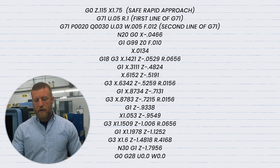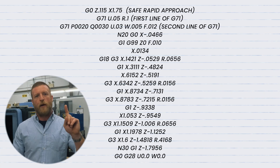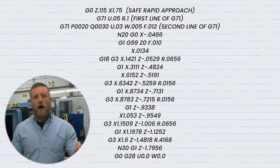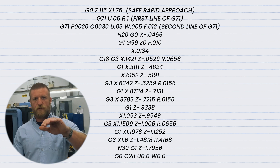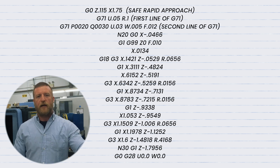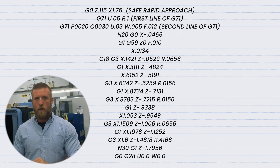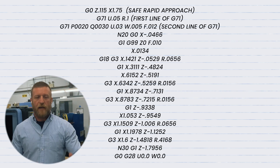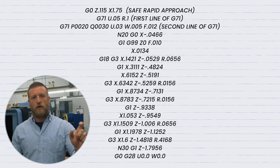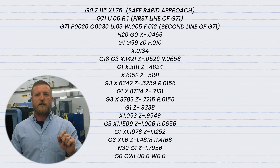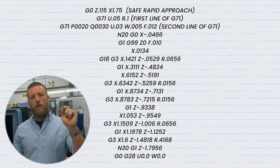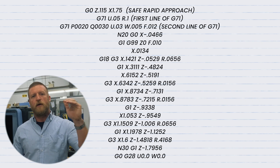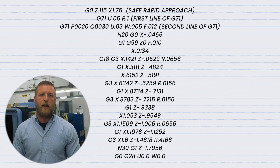Those N-lines are related to the P and Q of the second line of the G71. So N1, the first line, would be your P0001. Or your last N-line, N2, would be Q0001. So the second line of that G71 — the P and the Q — reference that first N-line and the last N-line.